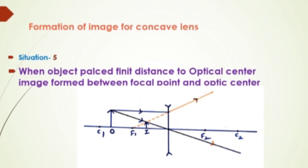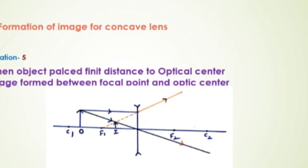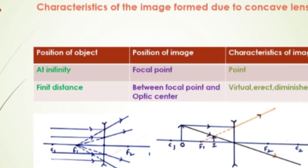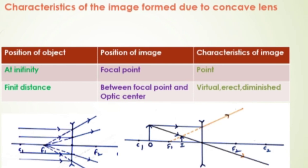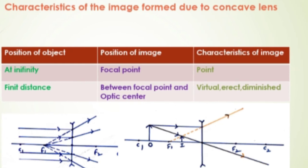Rule 5: When object placed finite distance to optical center, image formed between focus point and optic center. These are the characteristics of images of concave lens.